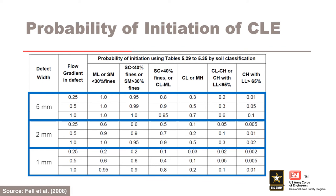This table further illustrates the influence of the likelihood of initiation of concentrated leak erosion as a function of soil type, crack width, and hydraulic gradient in a crack. It shows the probability of initiation in 1 mm, 2 mm, and 5 mm wide cracks for different soil types. Dispersive soils have similar probabilities of initiation as ML and SM soils. Erodibility increases from upper right to lower left in the table. For each crack width, likelihood increases from top to bottom with increasing hydraulic gradient.